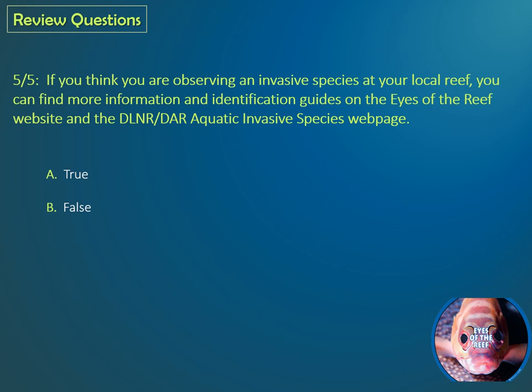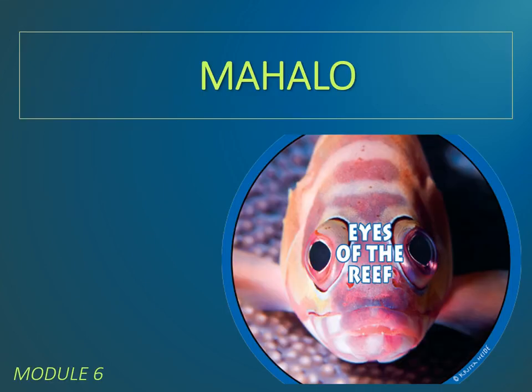Last question: If you think you are observing an invasive species at your local reef, you can find more information and identification guides on the Eyes of the Reef website and the DLNR DAR Aquatic Invasive Species webpage. True or false? The correct answer is A, true. If you missed more than a few questions, you may want to go back and review the materials in this module before moving on. Mahalo for your participation in the Eyes of the Reef online training program. In the next module, you will learn more about recognizing coral conditions on your local reef.